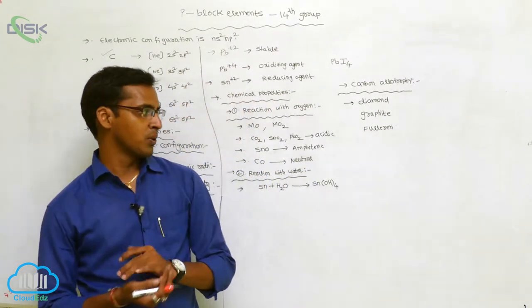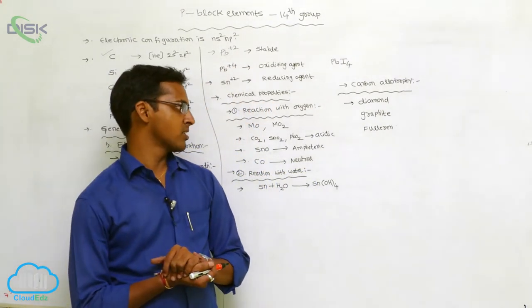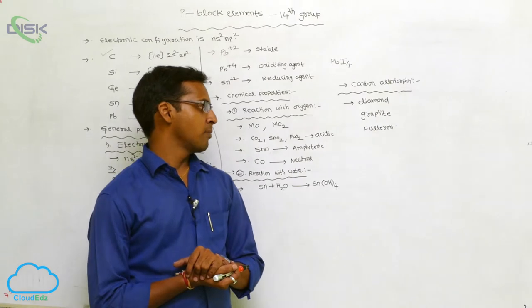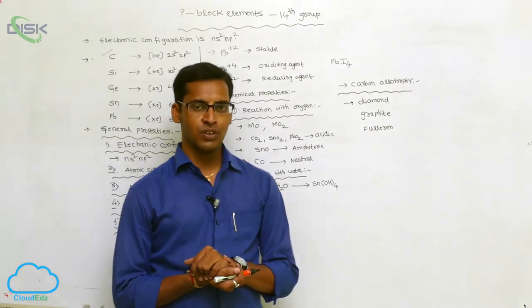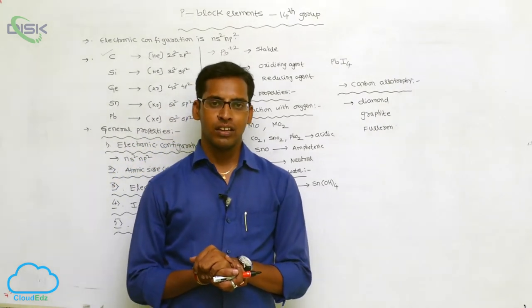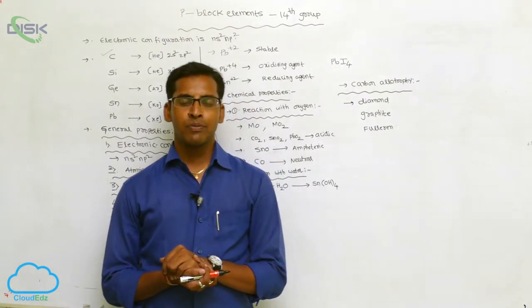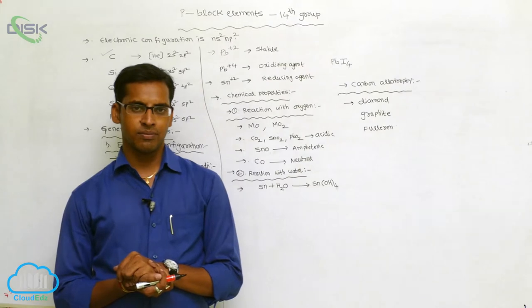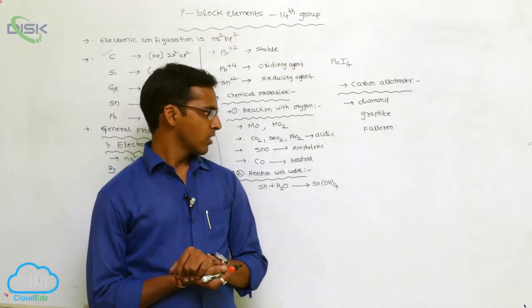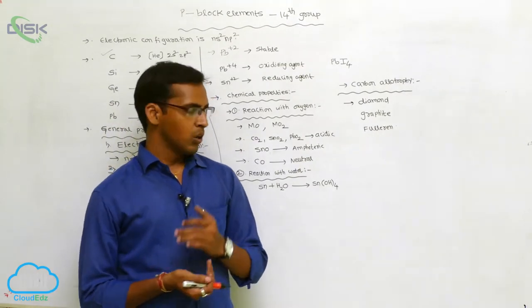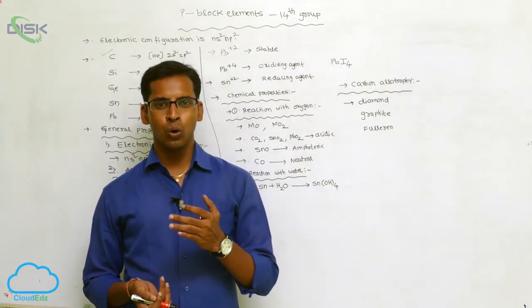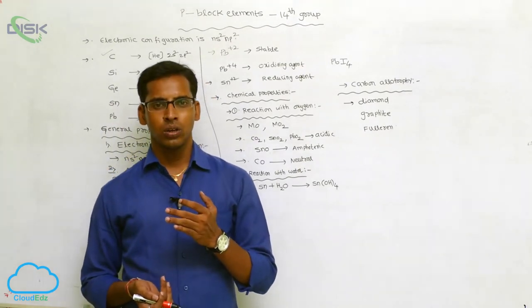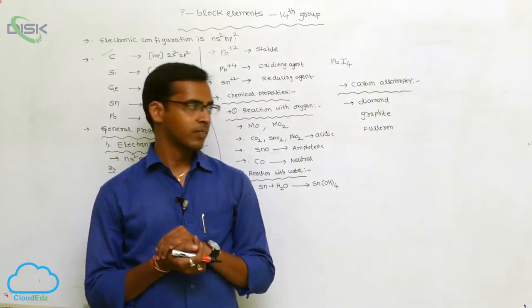The crystalline allotropy examples are diamond, graphite, and fullerene. Amorphous allotropy examples are coal, coke, and similar substances.